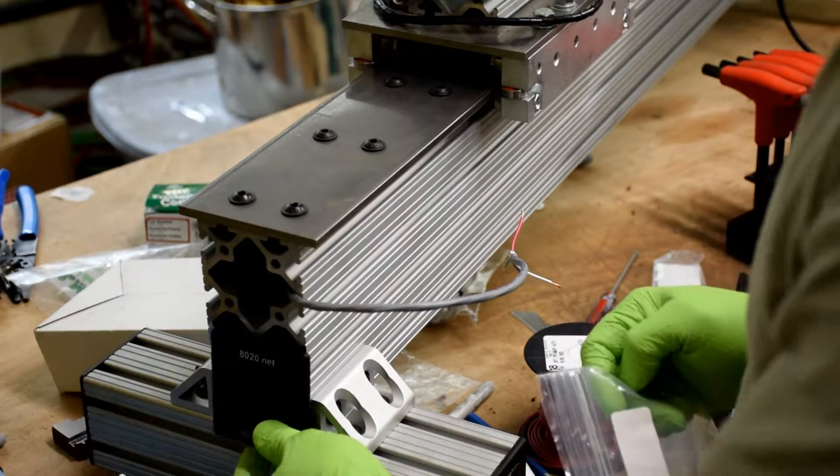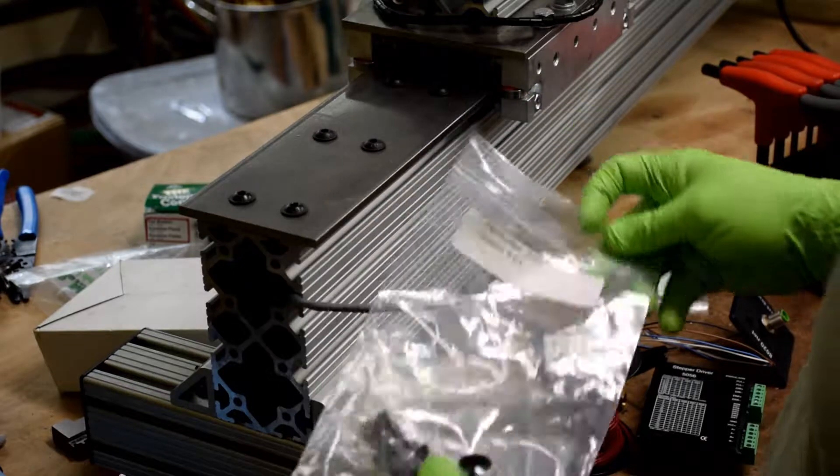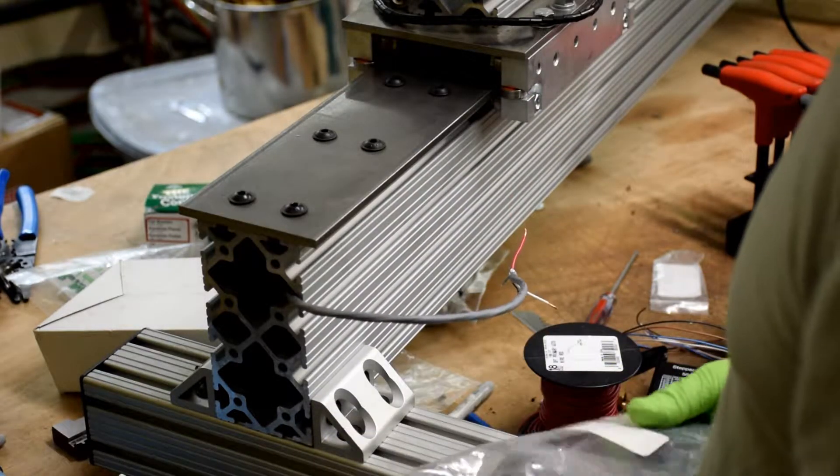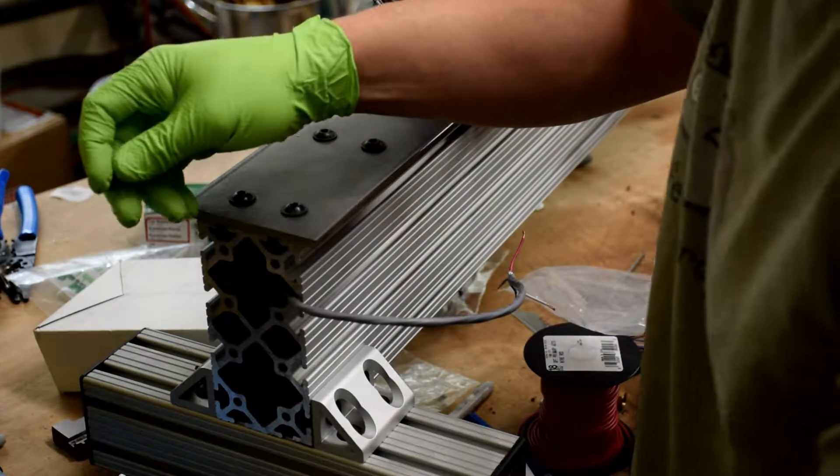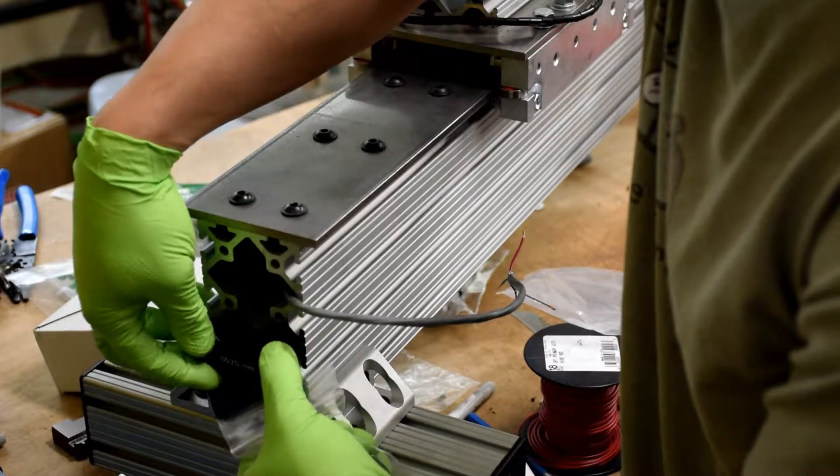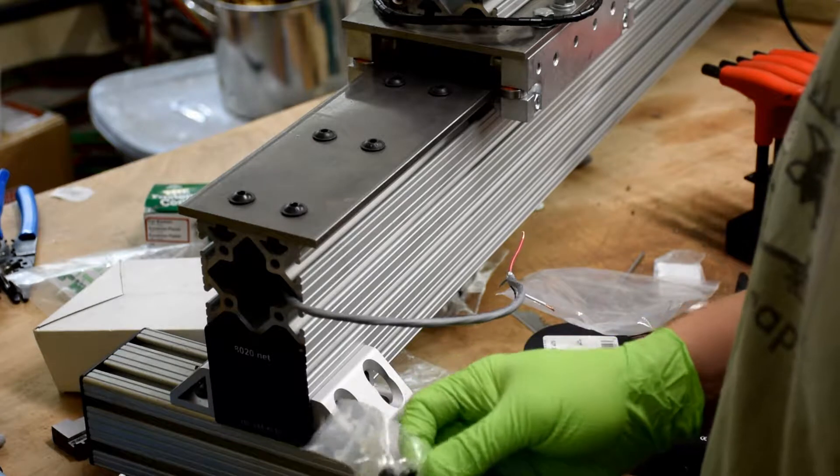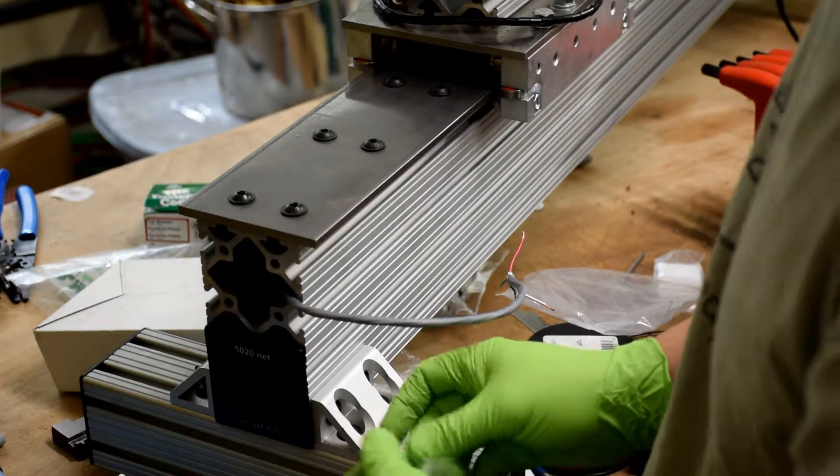We're going to work on the other end of the lathe for a little bit here. I'm going to take those remaining end caps that we used at the beginning of the lathe build to cap the 80-20 extrusion and the little push pins and just put those right on there. I've drilled a hole in the one that goes on top and mounted the remaining bulkhead connector into it.